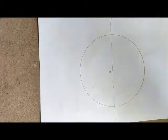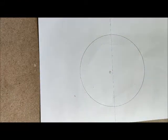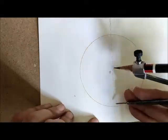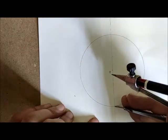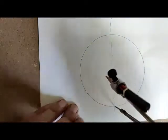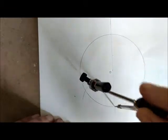We are going to take the distance of the radius and draw two arcs on the left and right. Place the marker on one end of the diameter and draw two arcs to the left and right.